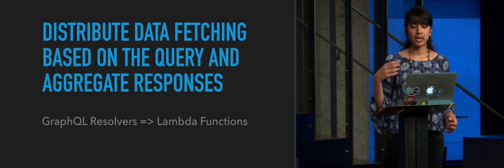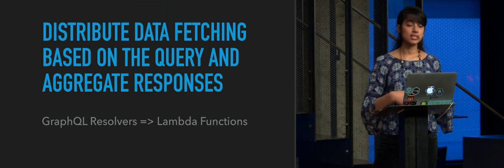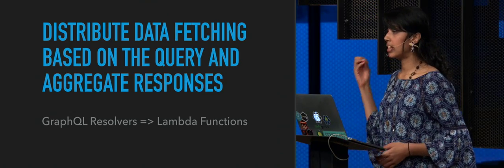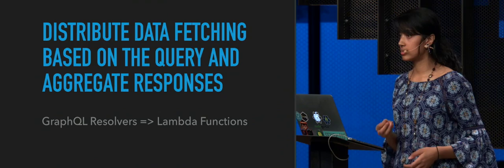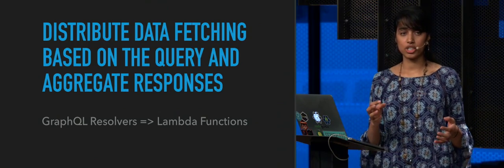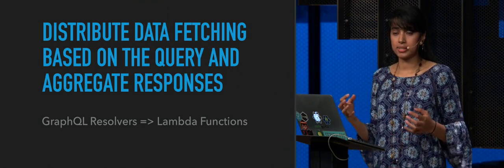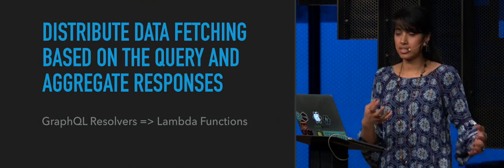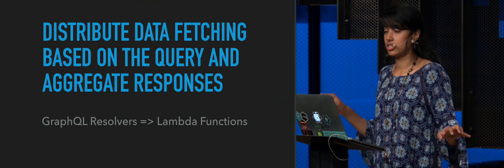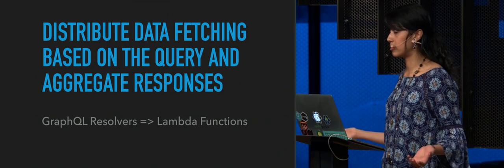The UI was a static website hosted from an S3 bucket. This made requests to a single endpoint in the API Gateway, which would then trigger the GraphQL API facade Lambda function. This GraphQL Lambda function would then distribute the data fetching to multiple other microservices, each deployed as separate Lambda functions. Each type in the GraphQL schema has its own resolve function, and the resolve function can map to a Lambda function, so each type can fetch data from different sources.